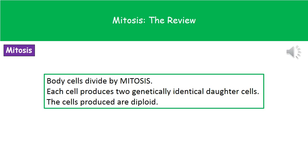Any body cell that is dividing will be dividing by this process called mitosis. Make sure you learn how to spell that one as well, because they're quite picky on your exam about whether it's right or wrong. As a result of mitosis, every cell that undergoes that process produces two genetically identical daughter cells.